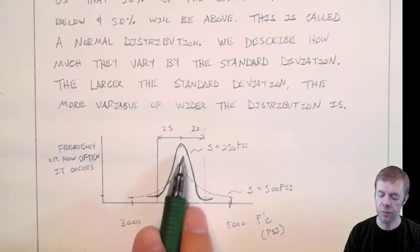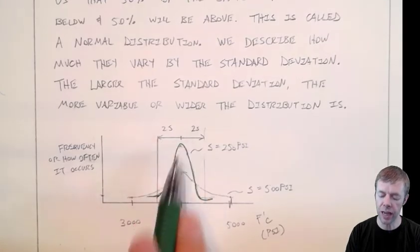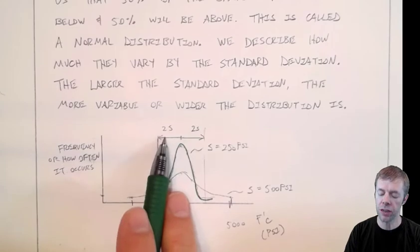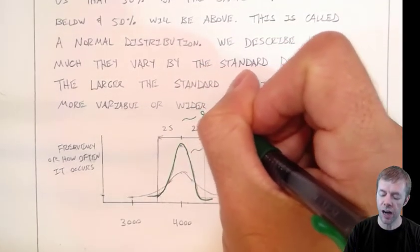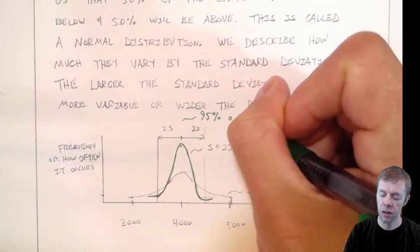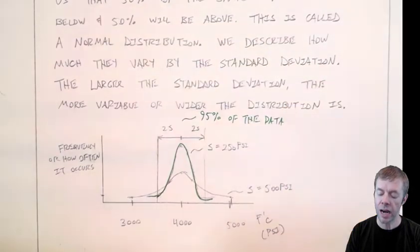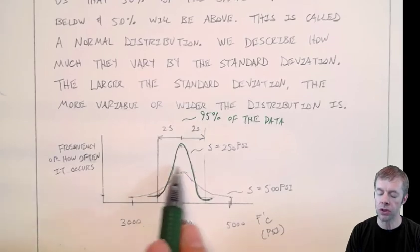How standard deviation works is that within plus or minus two standard deviations from the mean, that's the average, this covers 95 percent of the data.